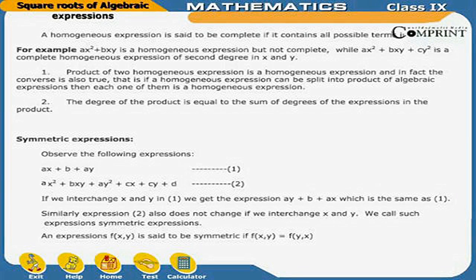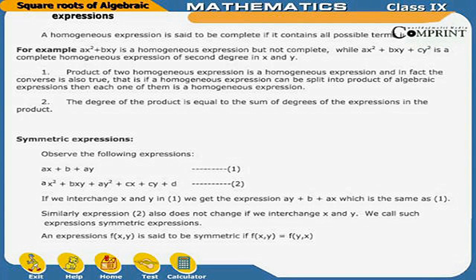A homogeneous expression is said to be complete if it contains all possible terms. For example, ax² + bxy is a homogeneous expression but not complete, while ax² + bxy + cy² is a complete homogeneous expression of second degree in x and y. The product of two homogeneous expressions is a homogeneous expression, and conversely, if a homogeneous expression can be split into a product of algebraic expressions, then each one of them is a homogeneous expression.